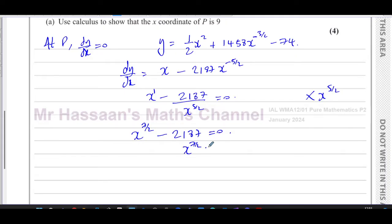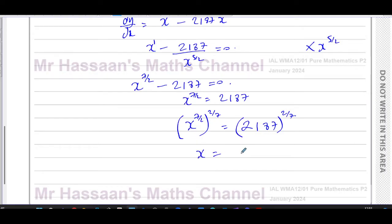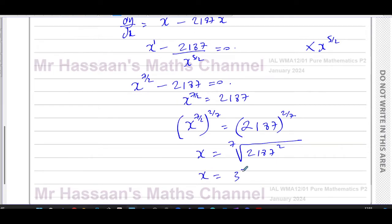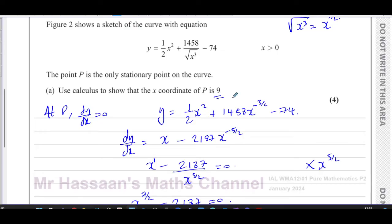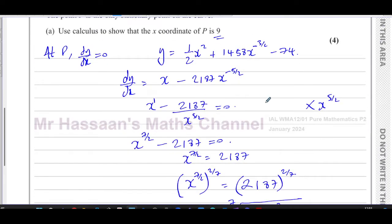So x to the power of seven over two equals 2187. To find x, we raise both sides to the reciprocal power of two over seven. This gives x equals 2187 to the power of two over seven, which is the seventh root of 2187, squared. The seventh root of 2187 is 3, and 3 squared is 9. So the x-coordinate of P is 9, which is what we had to show. That's the answer to part A.